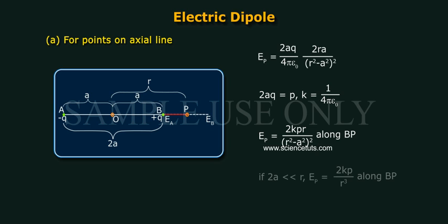As a special case, if 2A is much less than R, Ep is equal to 2KPR by R cube along BP.